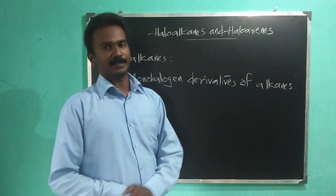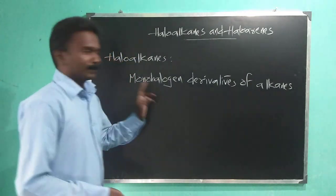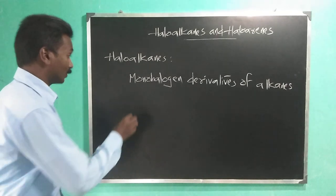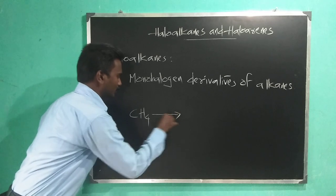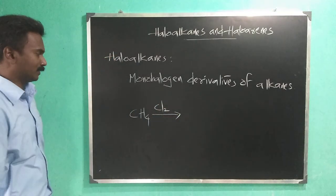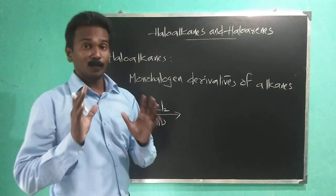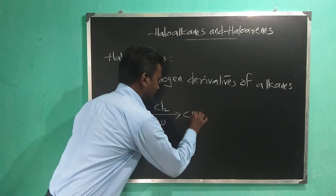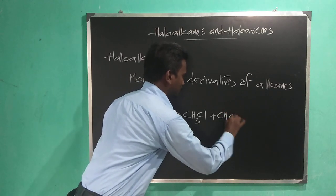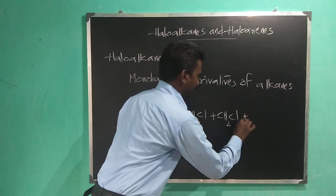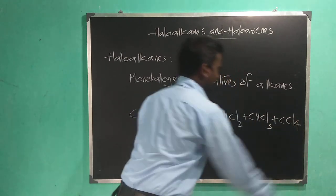For example, methane can undergo substitution reaction with chlorine. In presence of sunlight, we get a complex mixture: CH3Cl, then CH2Cl2, then CHCl3 and CCl4.